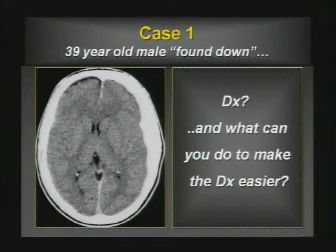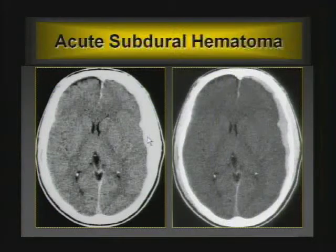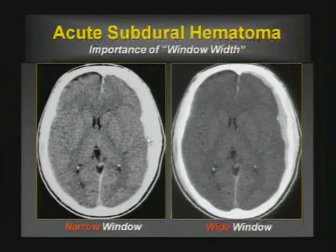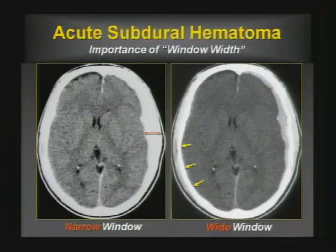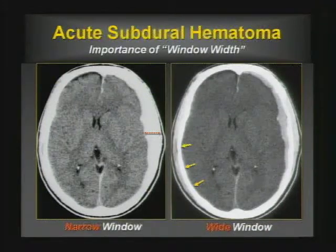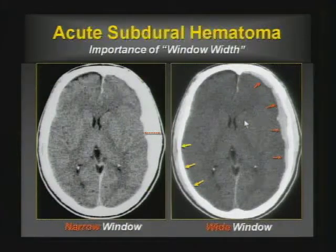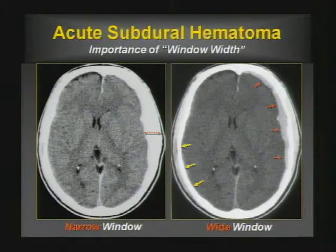Case one: a patient found down. You have a CT. What's the diagnosis? What can you do to make the diagnosis easier? You widen the window. You're looking at a narrow window width and you see that the skull looks thicker on one side than the other. You're looking for evidence of scalp injury because that shows you where the patient hit their head — that's the coup site. And then in the contrecoup site, that's where the vast majority of pathology happens, and that's a subdural hematoma.